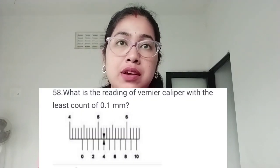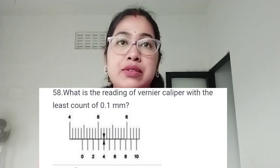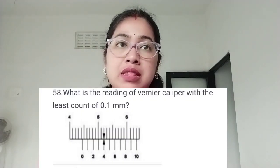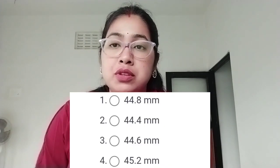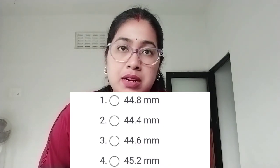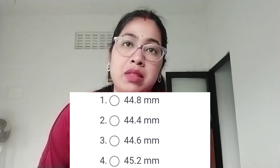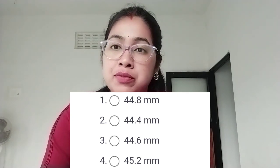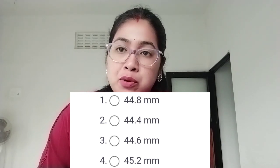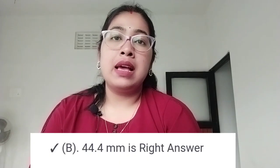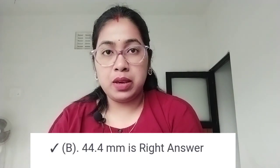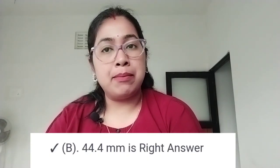Next question: what is the reading of the vernier caliper with a least count of 0.1 mm? Option 2: 44.4 mm. Option 3: 44.6 mm. Option 4: 45.2 mm. The correct answer is option B, 44.4 mm.